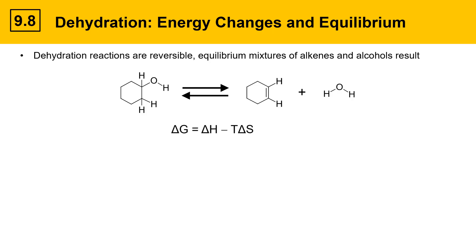Delta G is the overall energy change, and it equals delta H — the change in enthalpy, which is the heat part of energy — minus T times delta S, where T is temperature and delta S is the change in entropy or disorder. If delta G is negative, the reaction is favorable; if delta G is positive, the reaction is unfavorable and reactants will be favored.